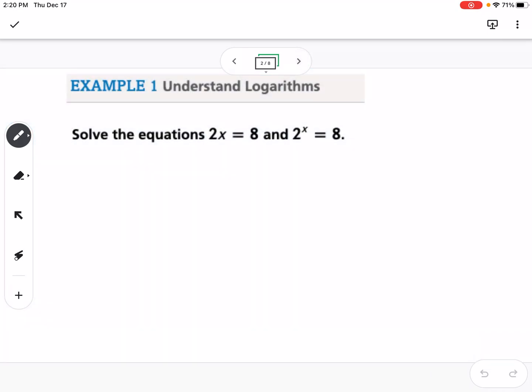Our first example says we're going to solve the equation 2x equals 8, and 2 to the x power equals 8. We know 2x equals 8, they're multiplying 2 times x, so we would do the inverse operation and divide, so we would get x equals 4.